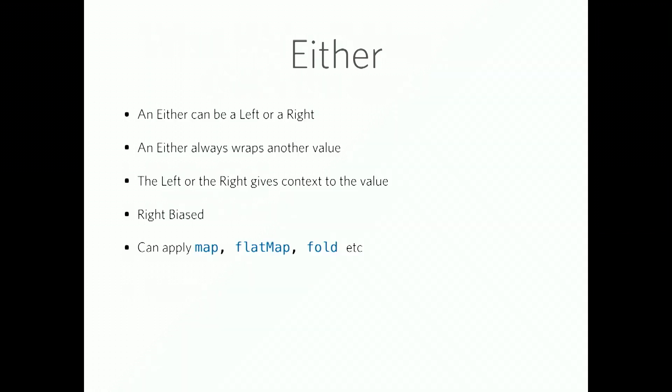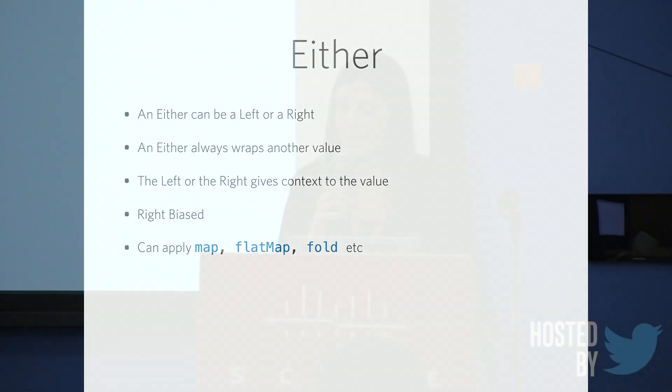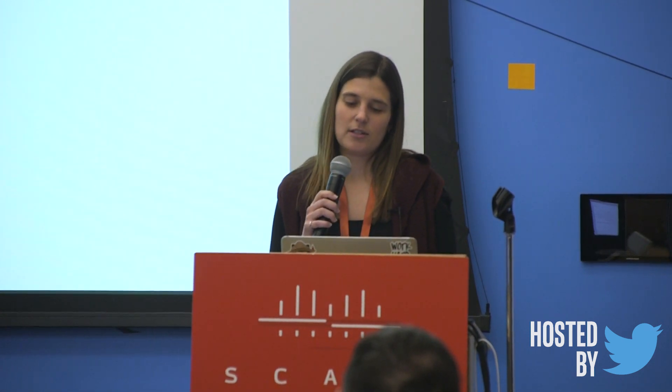So, what is an either? Here are some properties of an either. An either can be a left or a right. It will wrap another value. You can get context from the value depending on if it's a left or a right. They are right biased, and we'll talk more about what that means in a couple of slides. They are monads, so you can apply functions such as map, flat map, and fold to them.